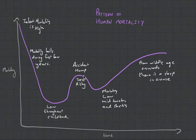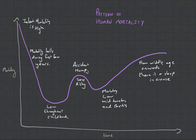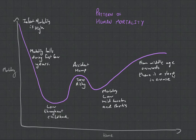Mortality then has a little bump between the teenagers and young adult years. It's known as the accident hump, because this is when people start dying from unnatural causes such as overdoing drugs, doing something stupid because of alcohol, or car accidents. Suicide is also a big cause of death here. But then as you mature and become a proper adult, your mortality drops, and then it slowly increases as you get old and die from disease as your body just wears out.